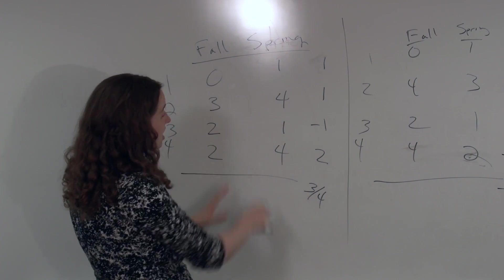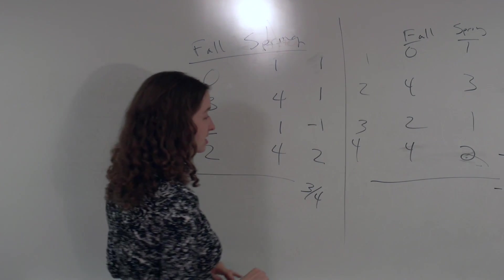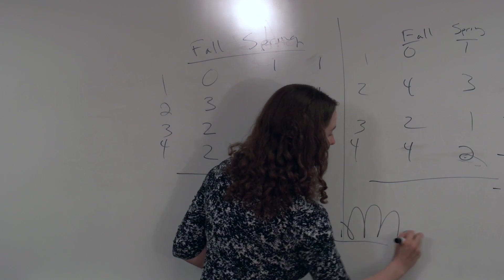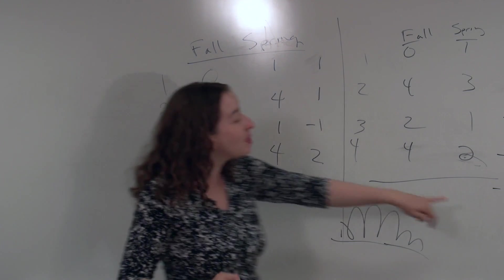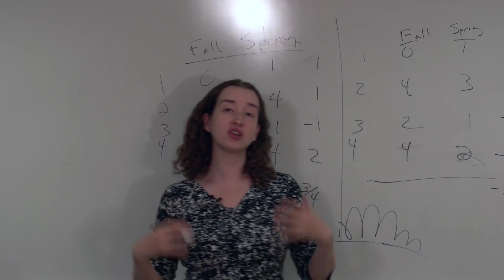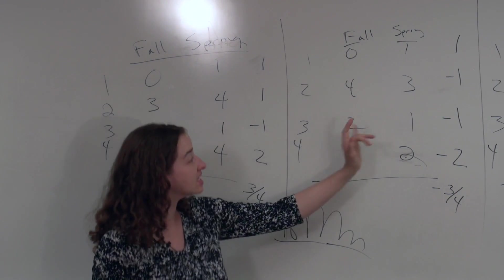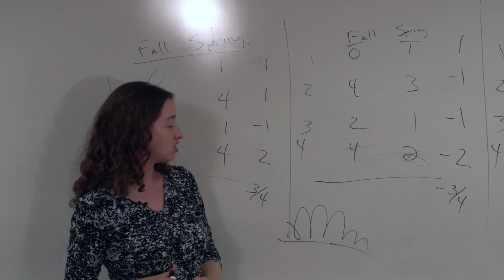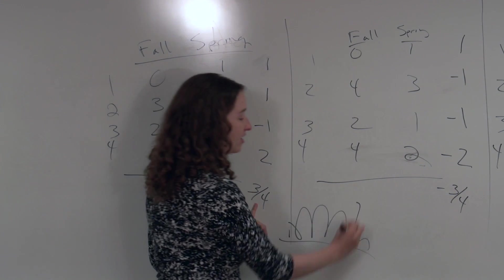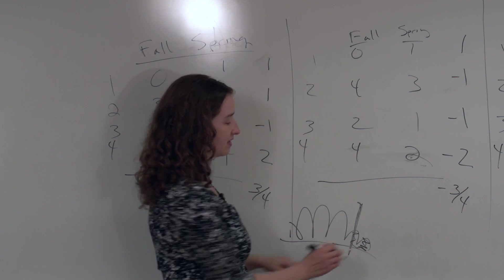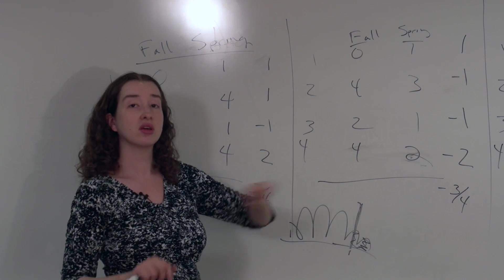So a permutation test in this context for this particular test statistic of a difference in means would consist of coming up with a histogram of all the different possible values of this test statistic under different permutations that are possible given the null hypothesis that the fall and spring are interchangeable. And then I'll find the value I actually observe and figure out the probability that I'd see a value at least that extreme when the null is true.